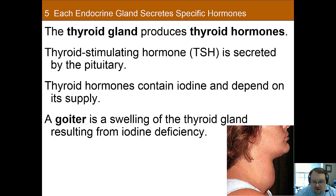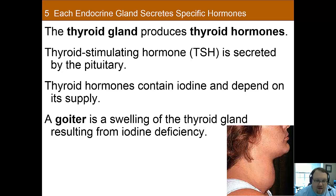The thyroid gland produces several hormones, which we'll refer to collectively as thyroid hormones. These have widespread effects throughout the body, including growth, metabolism, and maintenance of the brain. Thyroid stimulating hormone (TSH) is released by the anterior pituitary gland to stimulate the thyroid and lead to the secretion of thyroid hormones — that's how this system is managed.